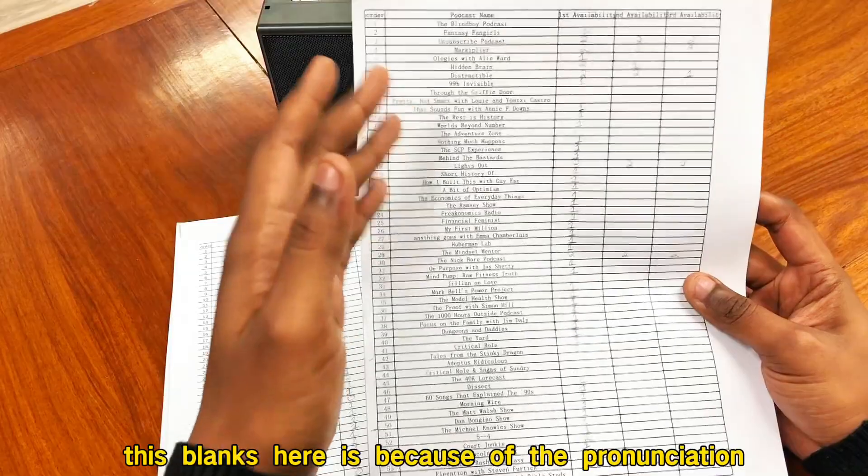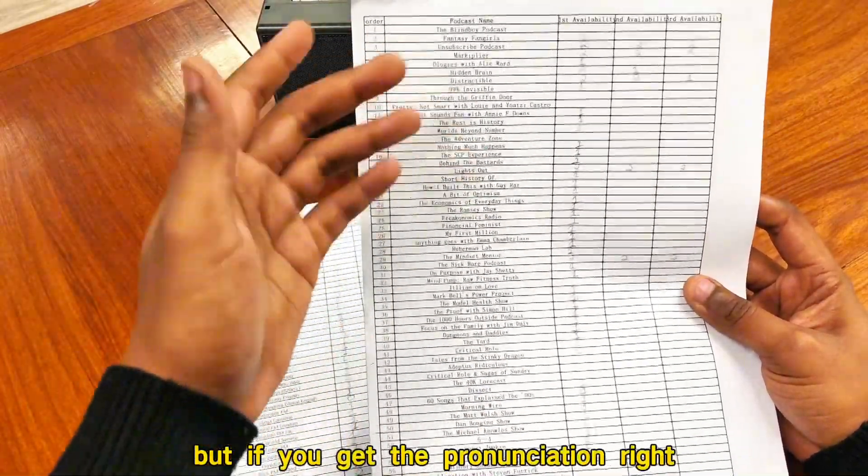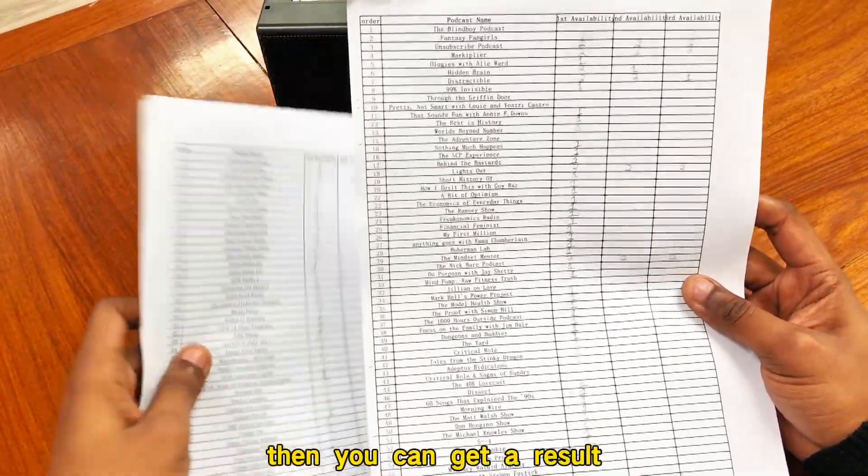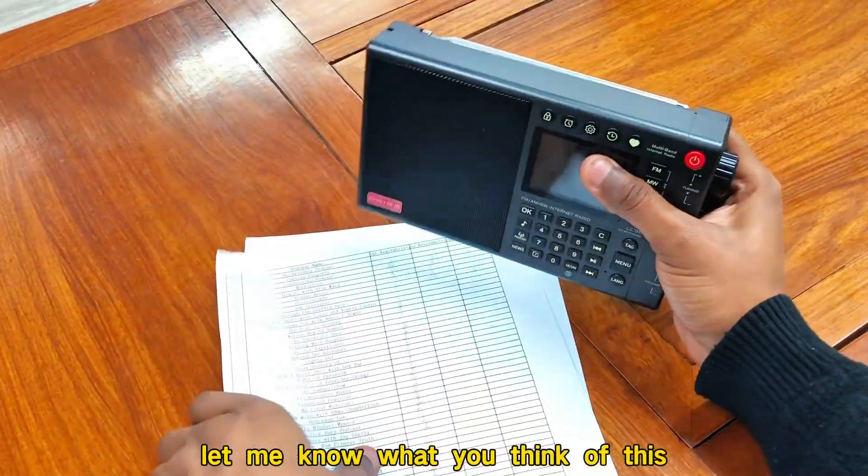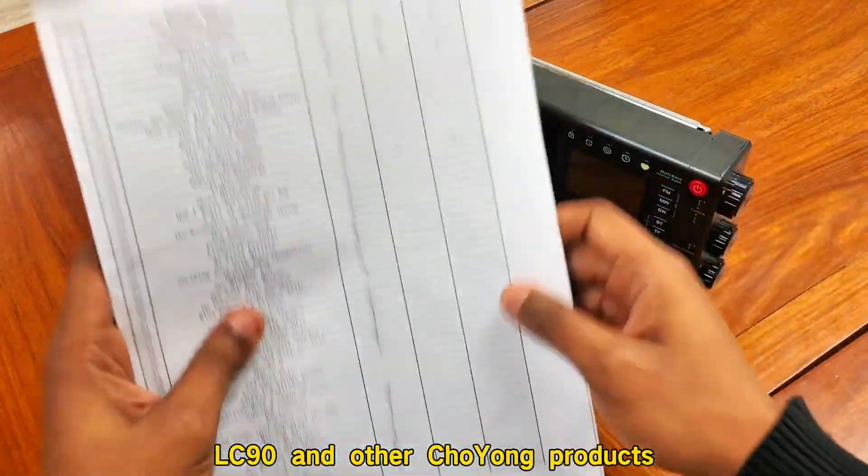Basically, the only reason there's blanks here is because of the pronunciation. But if you get the pronunciation right, then you can get a result. Let me know what you think of this voice search feature from the Choyoung LC90 and other Choyoung products.